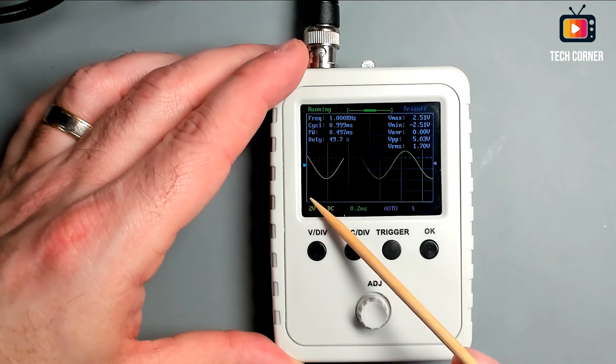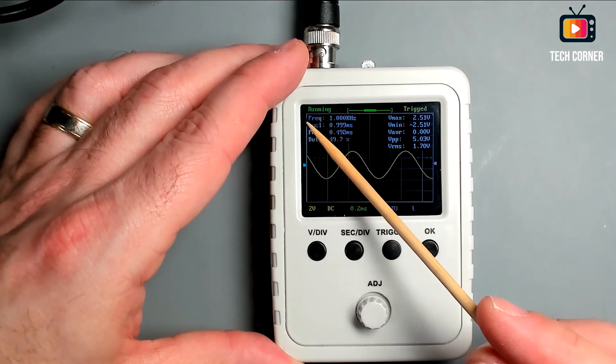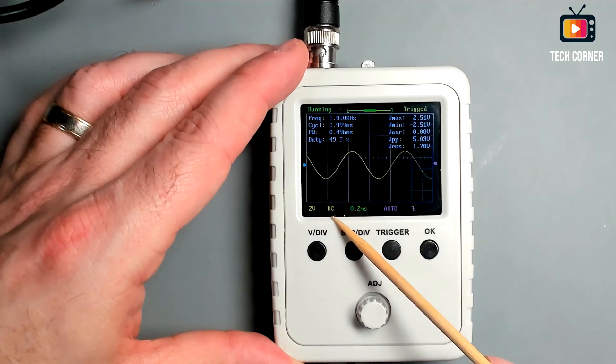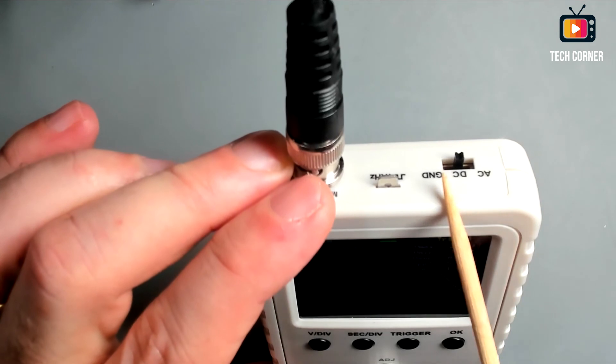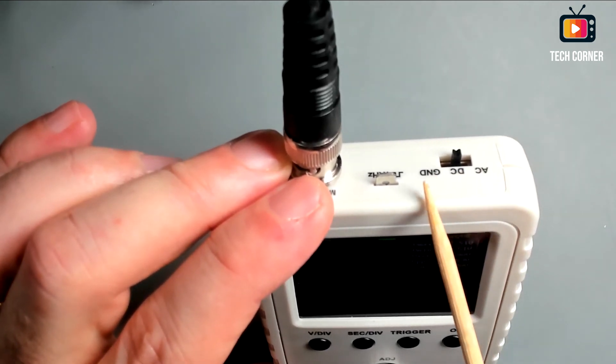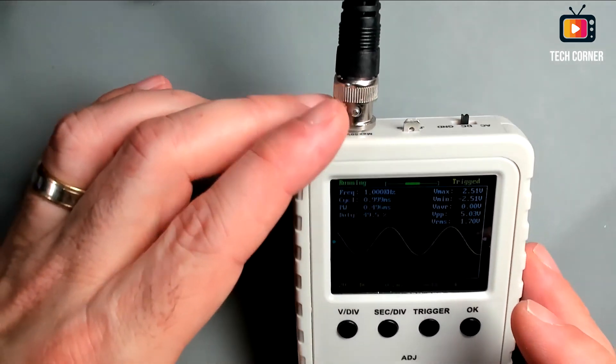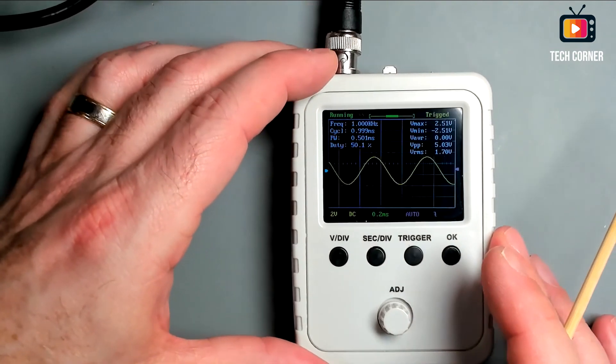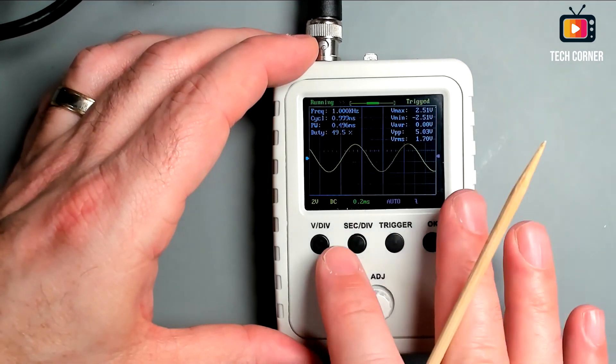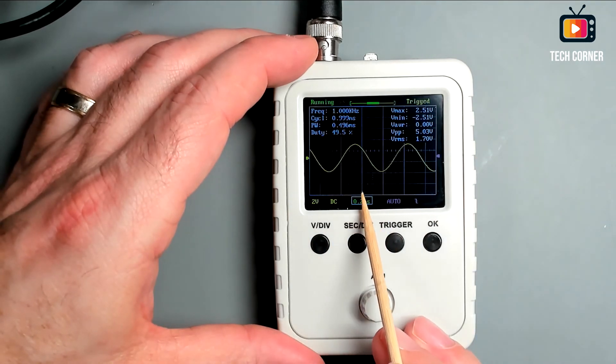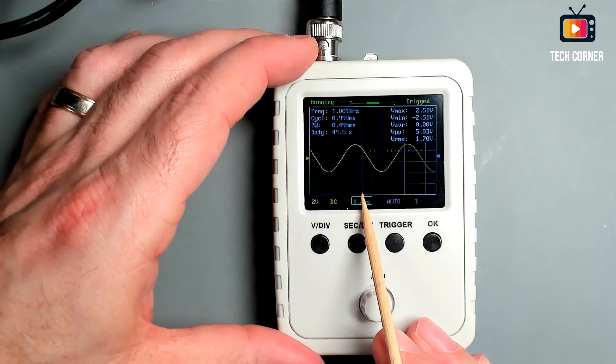So here on the left corner we have the voltage indicator. We have two volts. It relates to the Y column of the graph. And each square has two volts height. We have also the DC indicator. It relates with the coupler: DC, AC or ground. Right now it's DC selected. And the ground is basically used for calibration of the device.